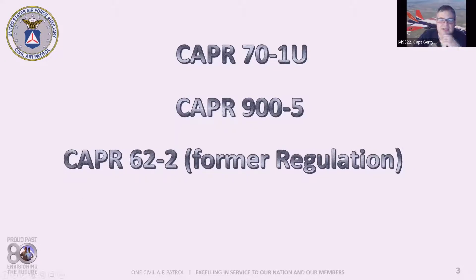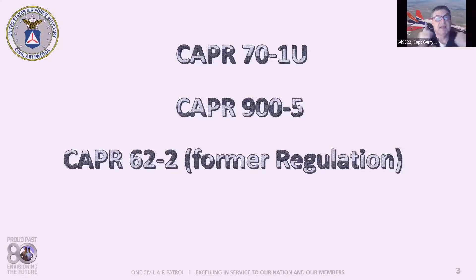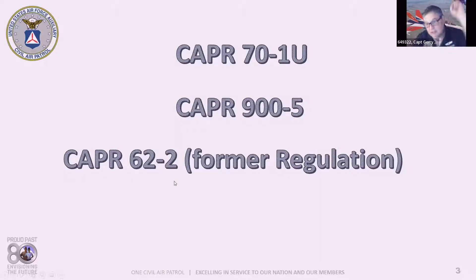CAPR 62-2, Mishap Reporting and Review, was the regulation we had prior to September 30th, 2019. It was replaced with CAPR 160-2. I only mention it here because some pages of the task guide have not been updated — they still reference 62-2. So when you see a reference to that regulation in the task guide, you should actually be going to CAPR 160-2.